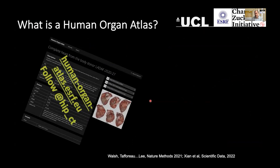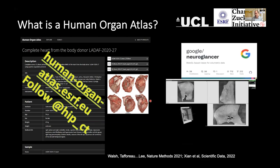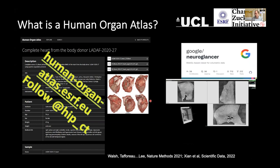We are creating a Human Organ Atlas. We've now scanned over 50 organs and are putting together a hub to scan many more, open for access by groups worldwide with funding to help train them. Much of the data is available at human-organ-atlas.esrf.eu. We're also loading data onto the cloud using Neuroglancer, kindly provided by Google, so these enormous datasets can be explored interactively by people around the world.